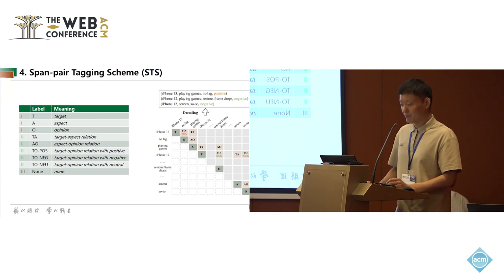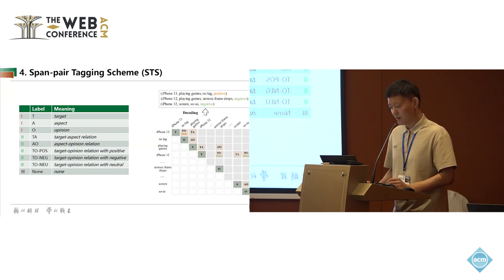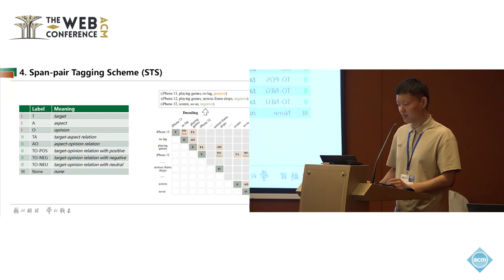For example, if the span pair iPhone 13, no lag is tagged with T-O positive, then the pair is a target-opinion pair with positive sentiment. Finally, we decode these matrices to obtain quadruple sets.